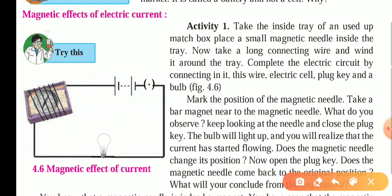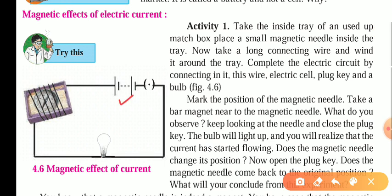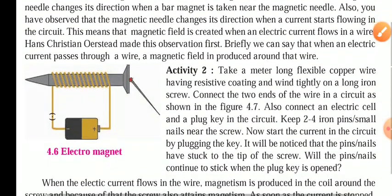To understand this relation, a practical is given here. A power supply is used, then a plug key, an electrical bulb, and a wire is passed over a wooden box in which a magnetometer or magnetic compass is kept. When we switch on the power supply, we observe a deflection in the magnetic compass. This deflection occurs because the conducting wire passed over the box starts to produce a magnetic field.